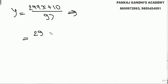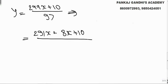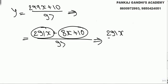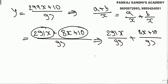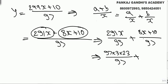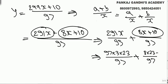We break 299x + 10 as 291x + 8x + 10. Using the distributive property: (291x + 8x + 10) / 97 = 291x/97 + (8x + 10)/97. Since 291 = 97 × 3, the first part simplifies to 3x. For x = 23: 8×23 + 10 = 184 + 10 = 194, and 194/97 = 2.